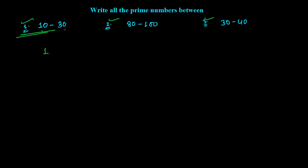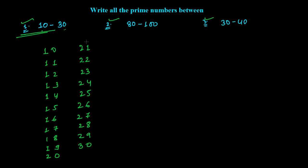So here, first I am going to write all the numbers from 10 to 30. And I need to find out all the prime numbers between 10 to 30. For that, you need to cancel all those numbers which are divisible by 2.